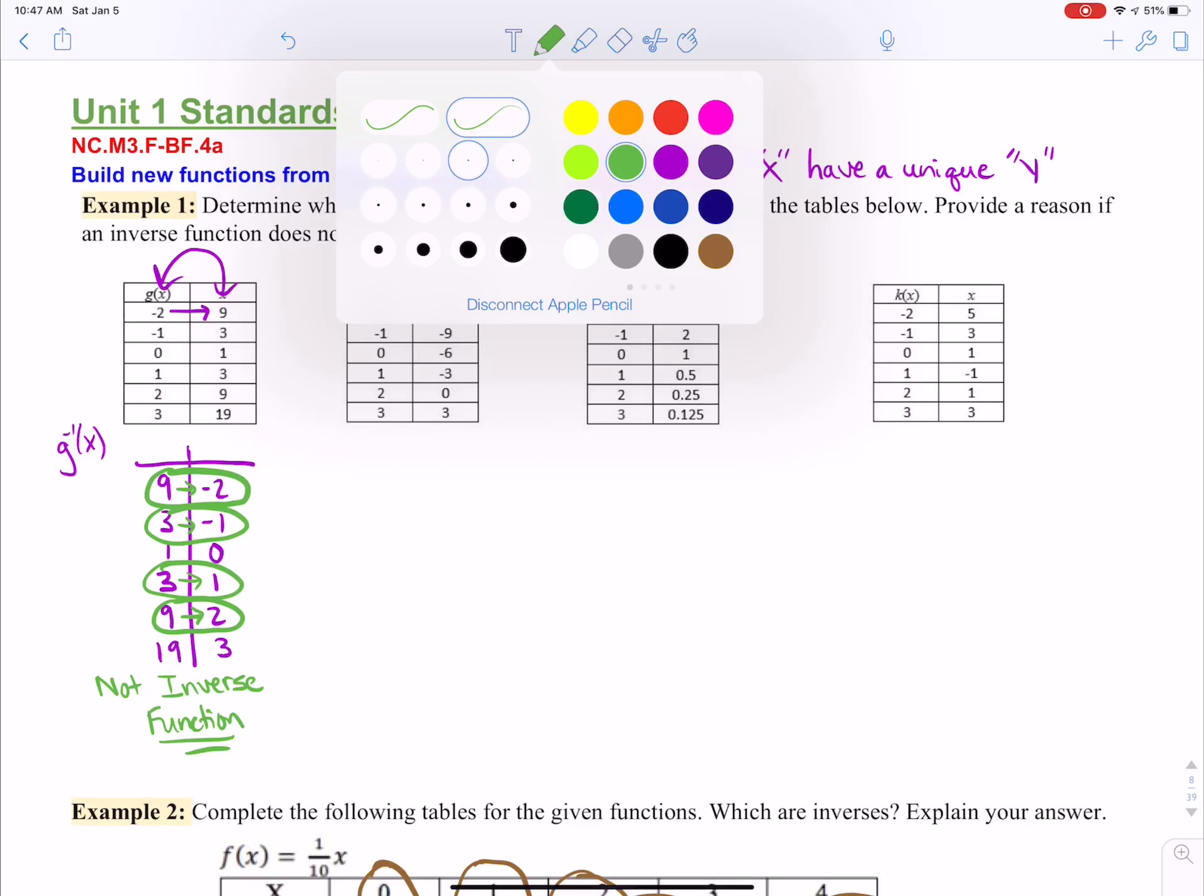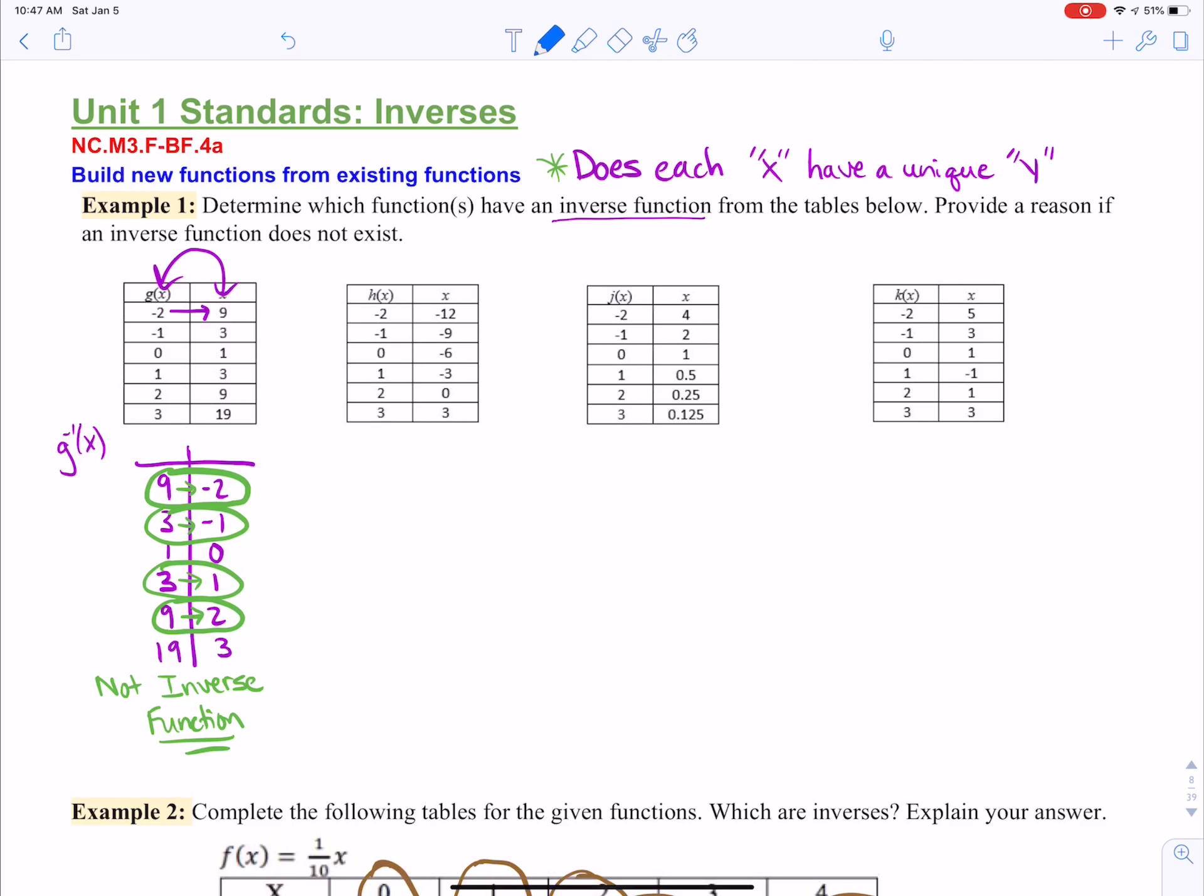So for the next one, let's switch x and y. So the inverse of h of x is to just make a new table and switch these values. So for negative 12, it goes with negative two, negative nine goes with negative one, negative six goes with zero, negative three one, zero two, and then three three.